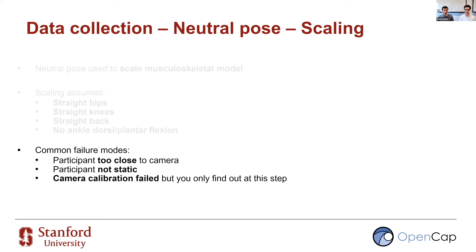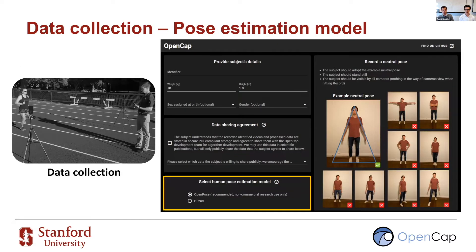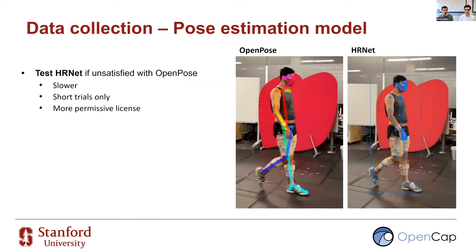Scaling might fail because pose estimation failed, which typically happens if the subject is too close to the cameras. Scaling might also fail if the participant is not static. If scaling fails multiple times, this might be a camera calibration problem, so restart a new session. You have the option to select two pose estimation models: OpenPose and HRNet. We recommend OpenPose mainly because it is faster, but HRNet may be more robust in certain cases — for example, when OpenPose fails from a sagittal view. HRNet is slower and better suited for short trials.